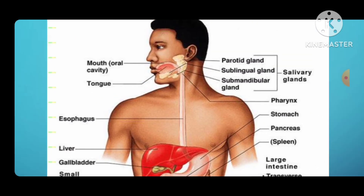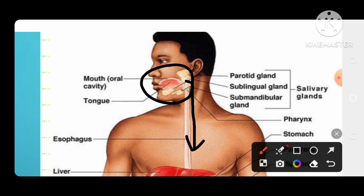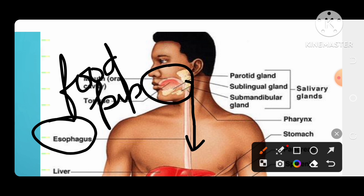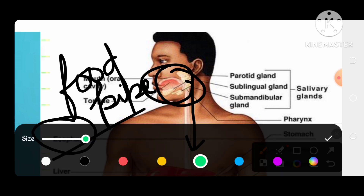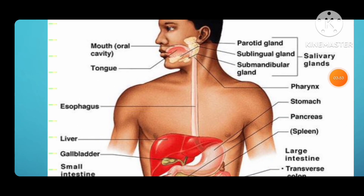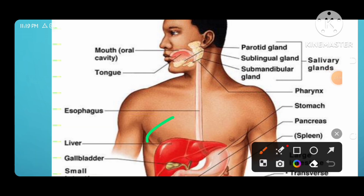Now let's look at a diagram. The food reaches the food pipe, which in Hindi is called the food pipe. The food pipe is a structure whose main function is just to carry our food down from the mouth to the stomach.